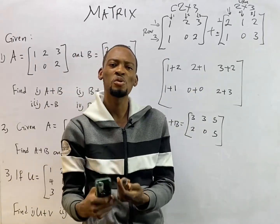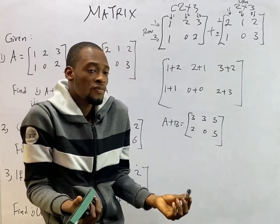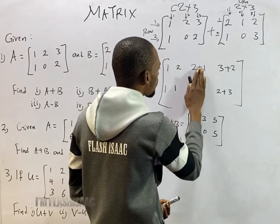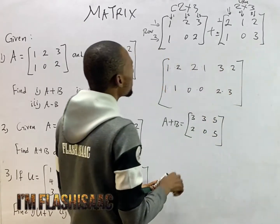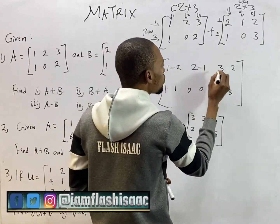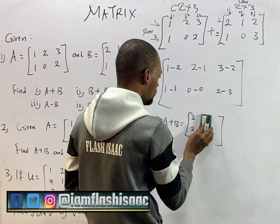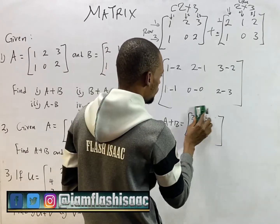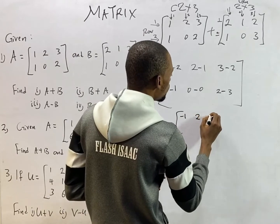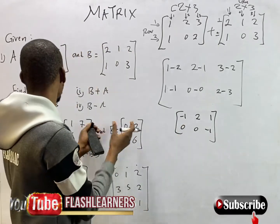This is how you do matrix addition. Subtraction is very similar — you simply change the addition to subtraction. Instead of saying one plus two, you say one minus two. So this becomes one minus two, two minus one, and so on. The answer will certainly be different: A minus B gives us minus one, two, one, zero, zero, minus one.